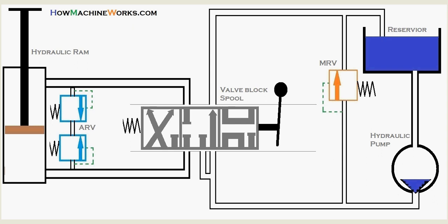Initially we have the reservoir, that's the hydraulic tank at the right side top corner. Then we have the hydraulic pump below it, then the MRV (the main relief valve), then the valve block and spool, then the hydraulic ram.